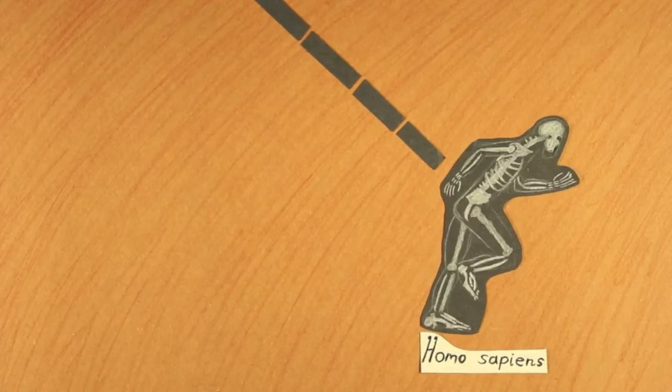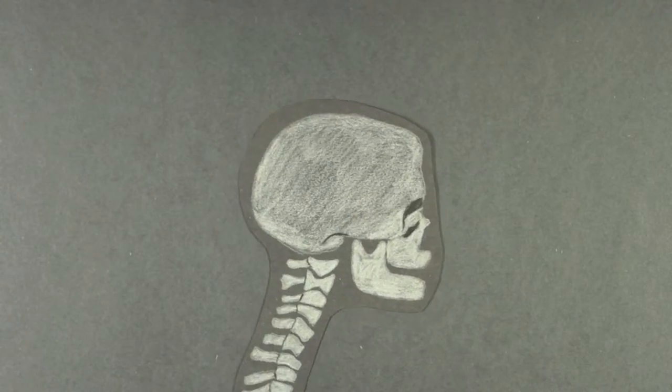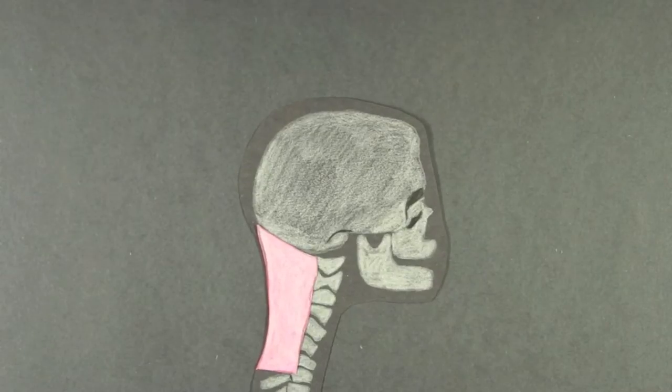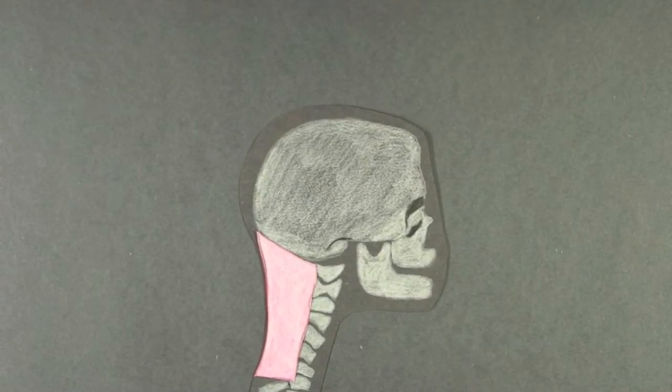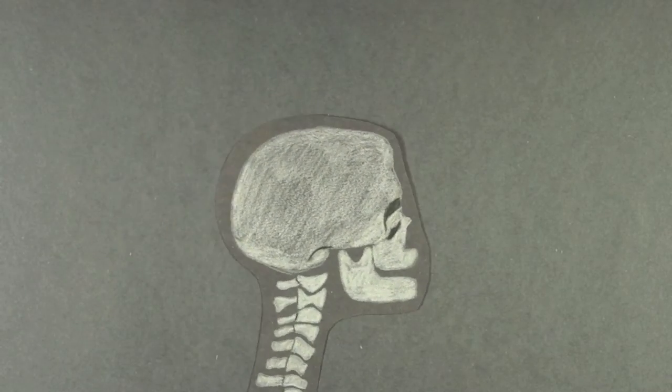One such modification unique to Homo is the nuchal ligament, located between the skull and the upper shoulders. This ligament balances the head while the body is constantly impacting the ground in a running gait. Without it, our head would bob back and forth as if we were a ragdoll.